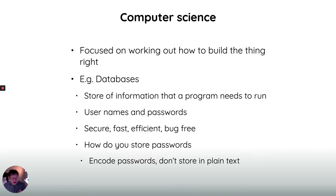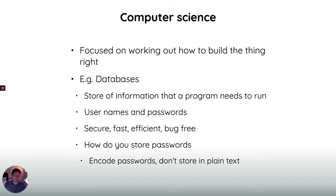This half of things is what computer science is mainly focused on — working out how things like databases should work. If you have a database it needs to store information that your program needs to run. If it's storing things, it needs to be secure, fast, efficient, and bug-free. And if you're storing something like passwords in a database, you need to encode those passwords and not store them in plain text, because if somebody manages to hack in and steal the database, they've got all the passwords.